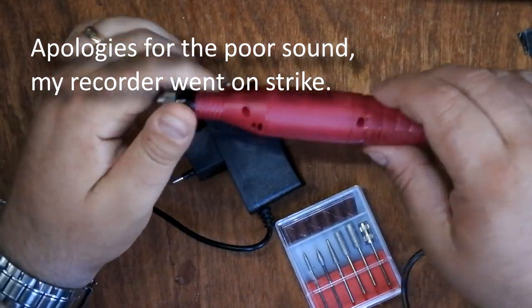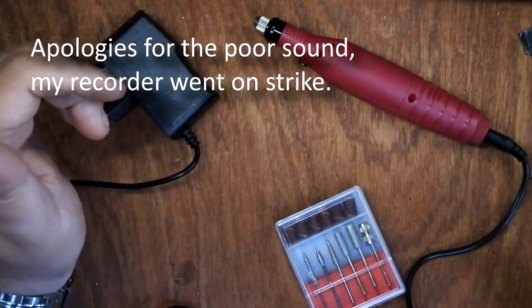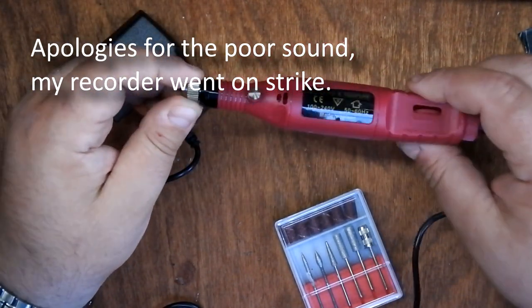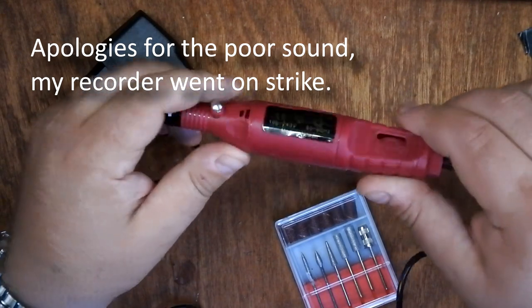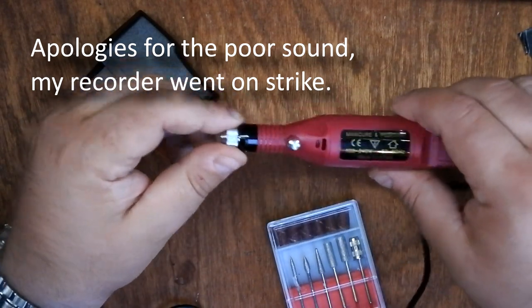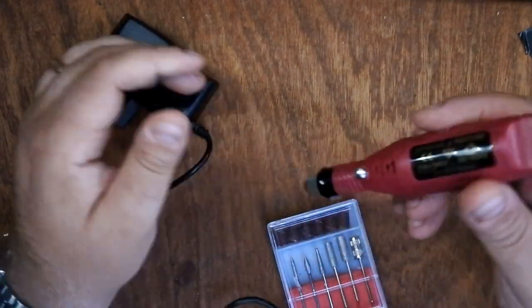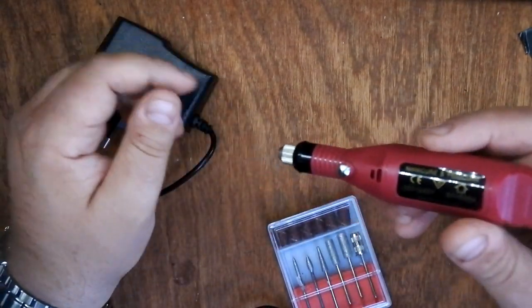Hello everybody. My latest eBay find which I found while I was skimming through an eBay shop. I think it was called Helishop 2015. And it was described as a nail art engraving kit.